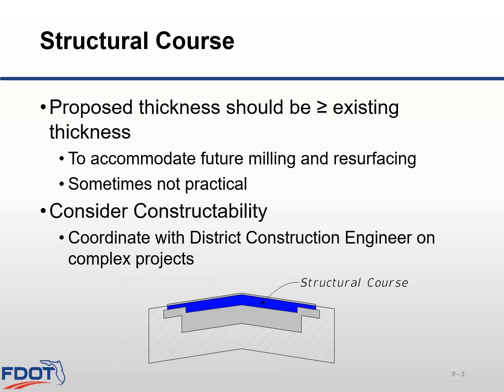For the structural course, your proposed thickness will need to be at least as thick as the existing structural layer. This will allow for future milling and resurfacing projects. If you place a much thinner pavement structure adjacent to a thicker existing one, when you come back and mill it in 20 years, you'll run the risk of milling into the base material of the thinner pavement structure.